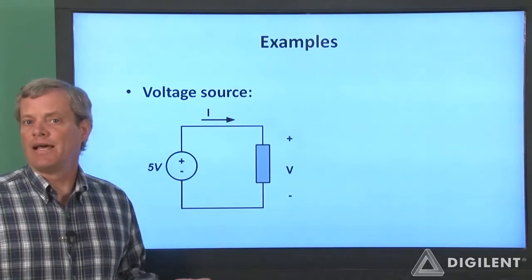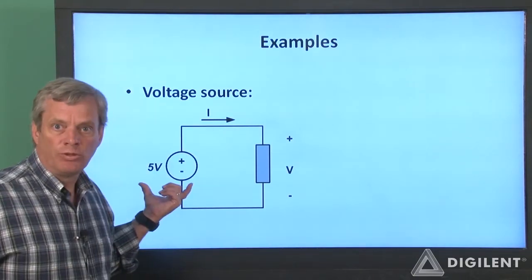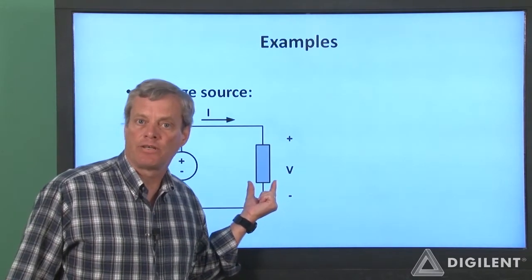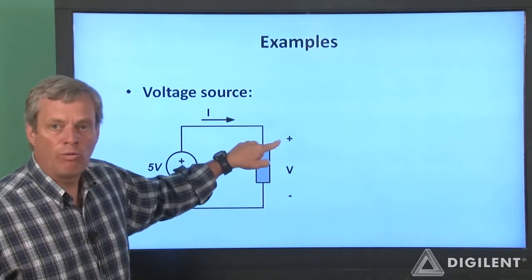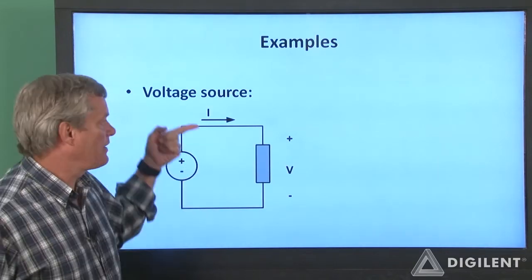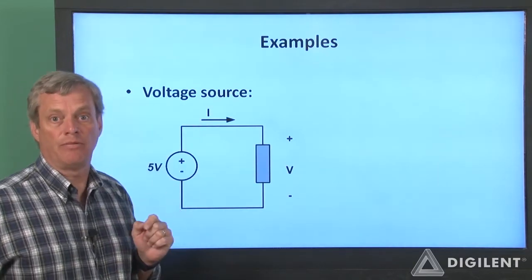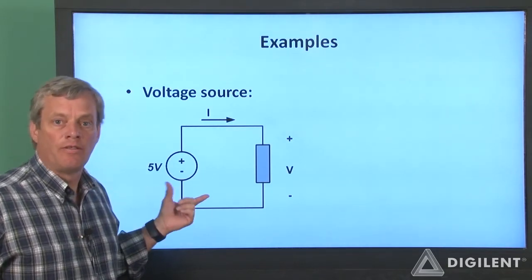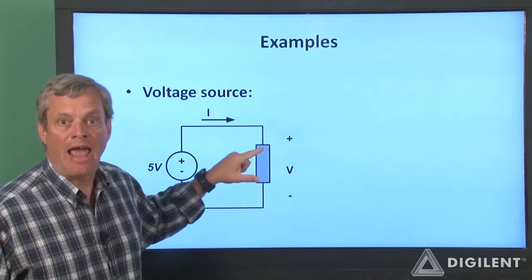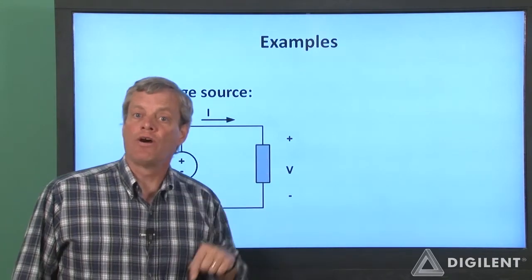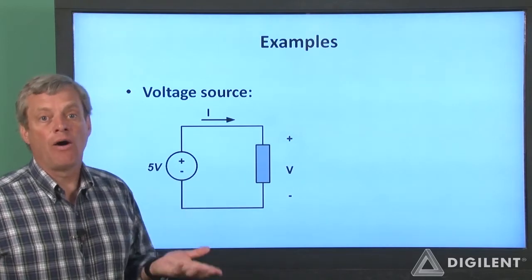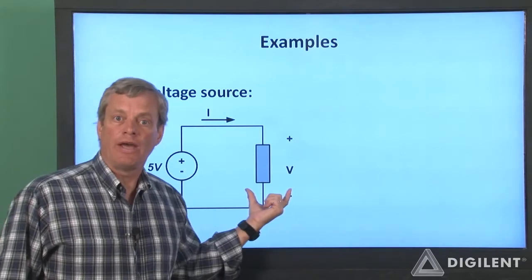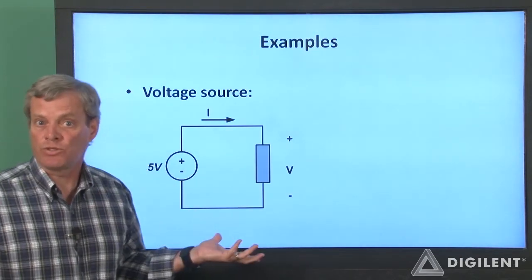Now let's look at a couple of quick examples. The first example is of an ideal voltage source with a voltage of 5 volts, which is connected across some unspecified circuit component. We want to figure out what we can about the voltage V across the circuit component and the current I through the component. The voltage source always has a voltage of 5 volts across it. Therefore, the voltage V across this circuit element has to be 5 volts, regardless of what the circuit component is. However, we don't know anything about the current I delivered by the source, since we don't know anything about the circuit component we've connected to the source.